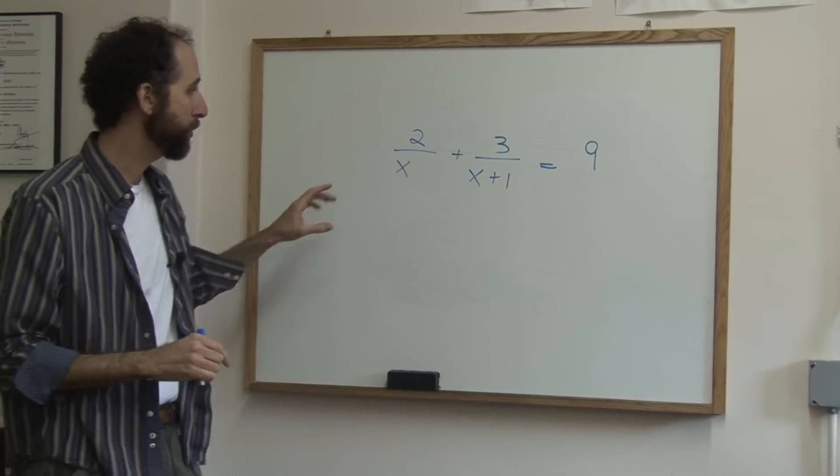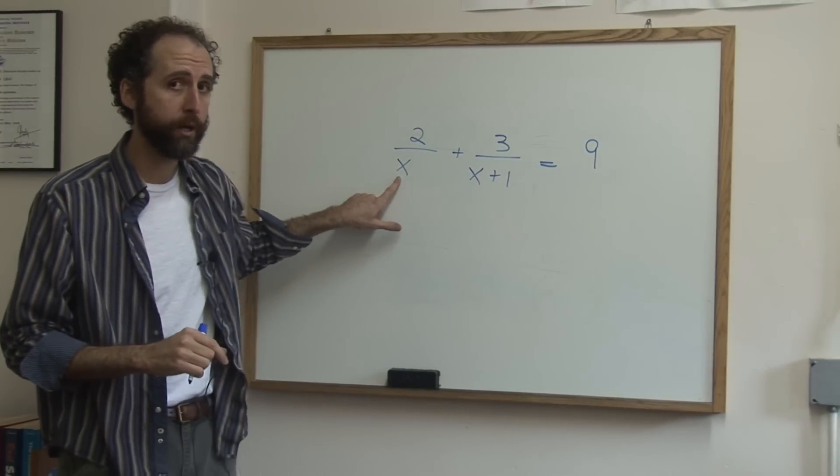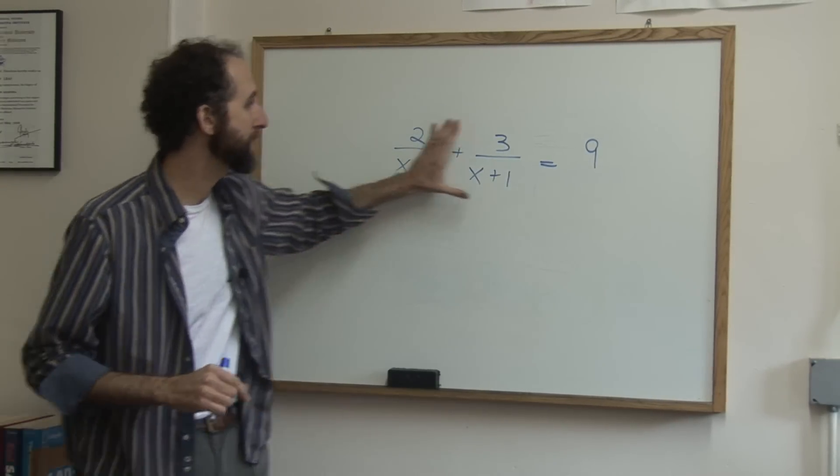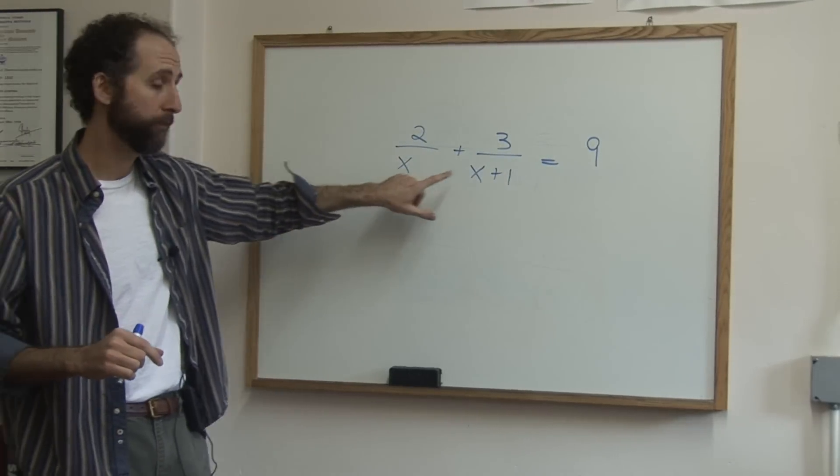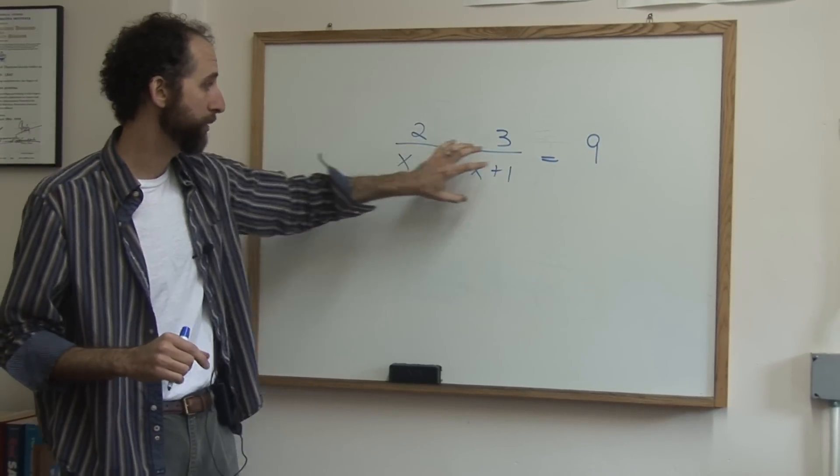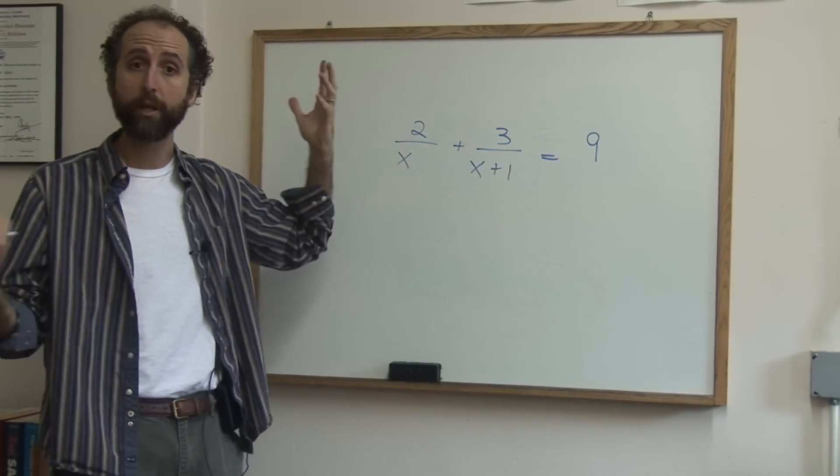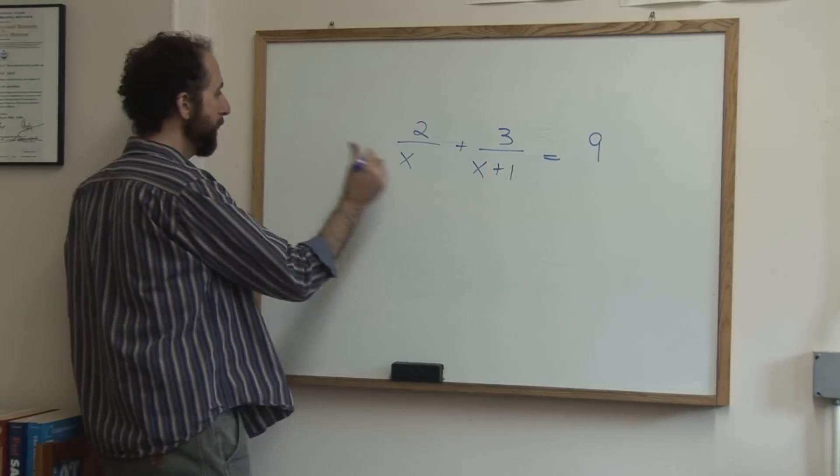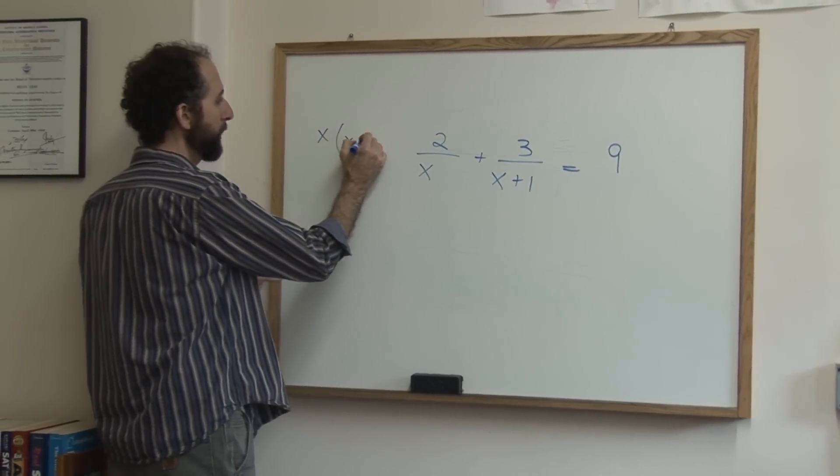what I'm going to do is take the common denominator, multiply the entire equation by that to eliminate the denominators, to get rid of the bottoms of the fractions, and then it will be easy. So the common denominator is x and x plus 1.